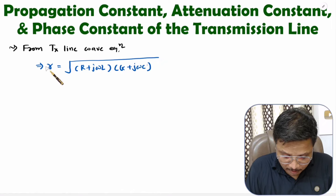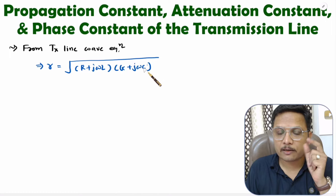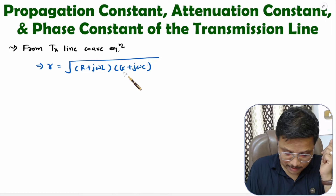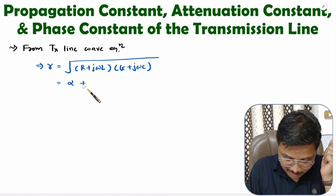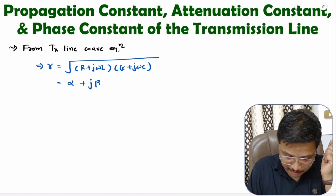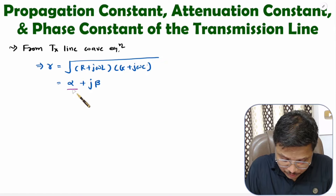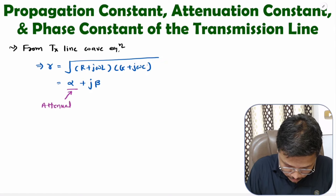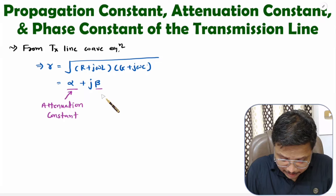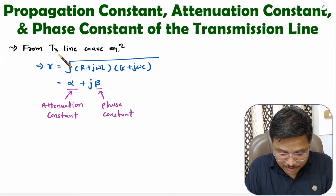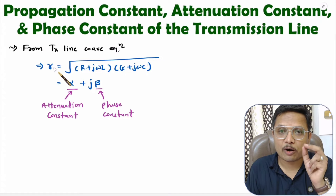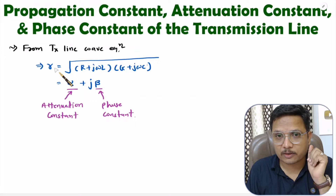With this propagation constant, we have two components — one is the real component and the second is the imaginary component. The real component is alpha and the imaginary component is beta. The real component explains attenuation, so alpha is the attenuation constant. The imaginary component explains the phase, so beta is the phase constant. Propagation constant is a combination of attenuation constant and phase constant.